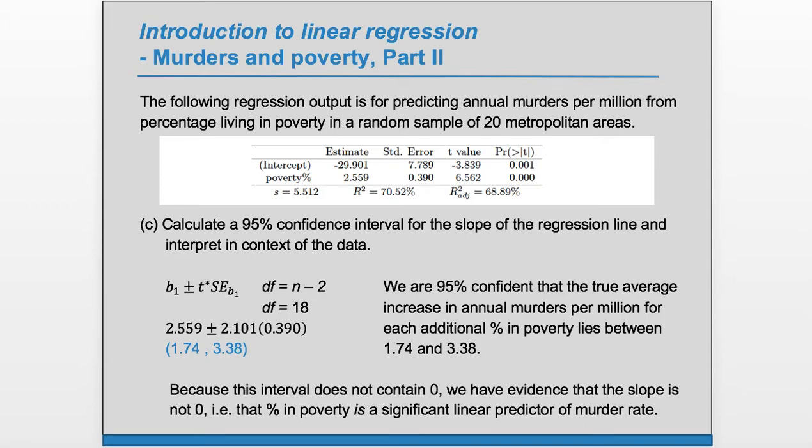Because this interval does not contain zero, we have evidence that the slope is not zero - that percent in poverty is a significant linear predictor of murder rate.